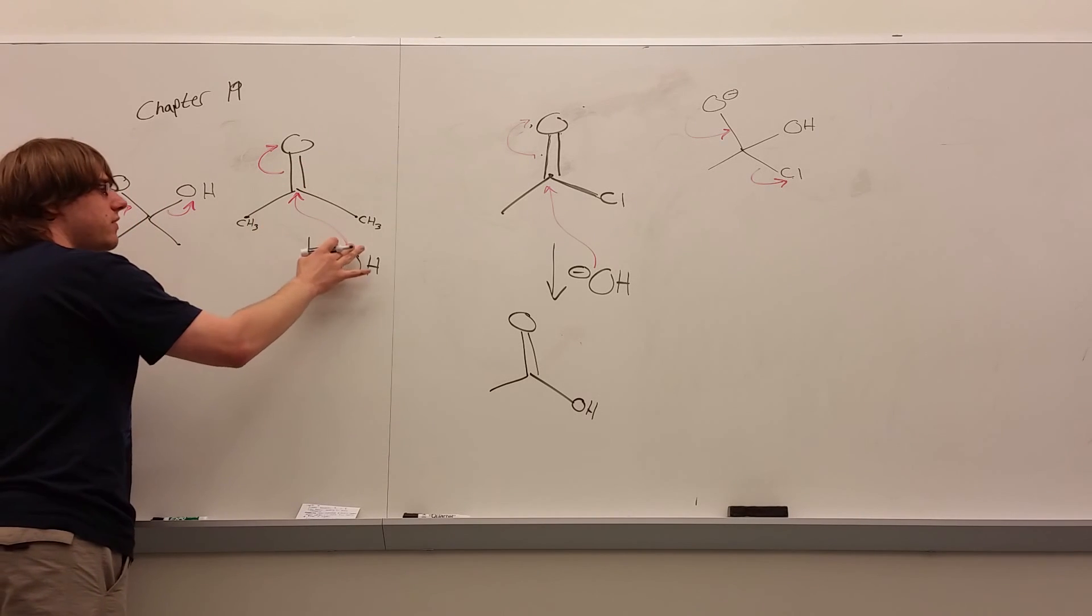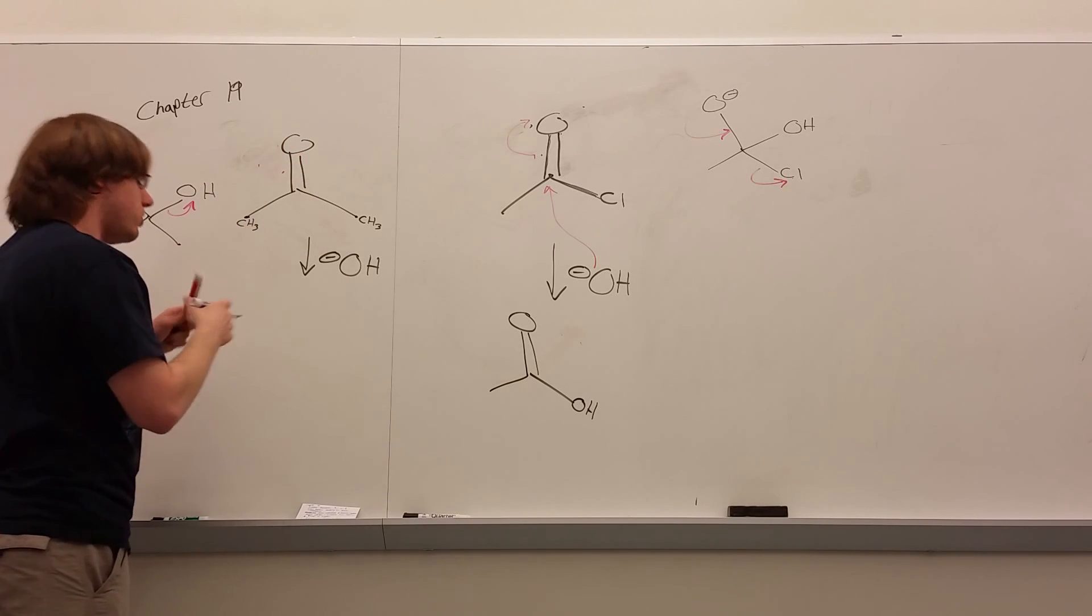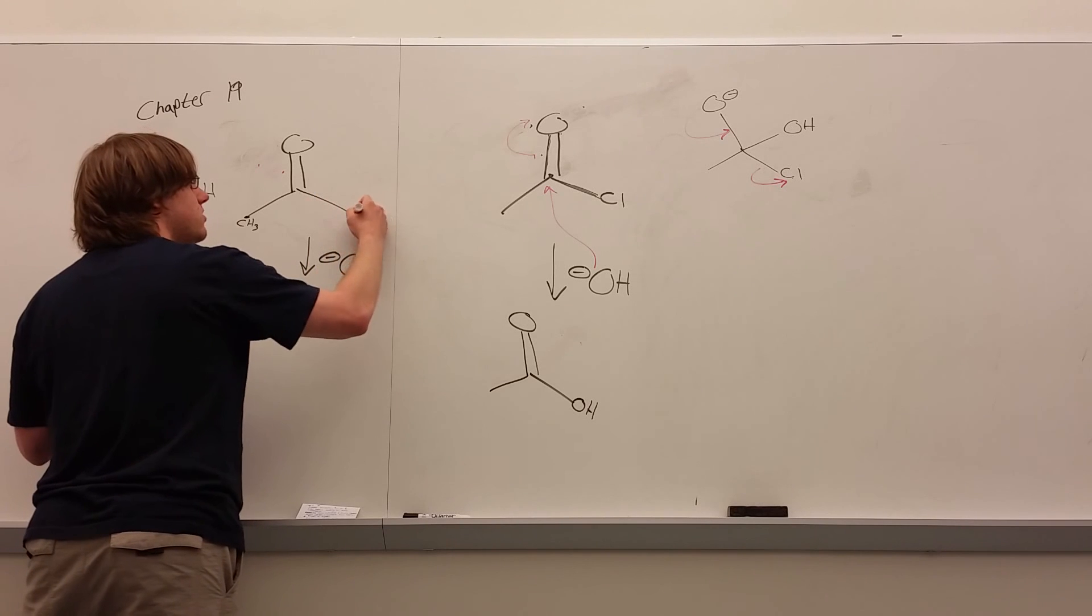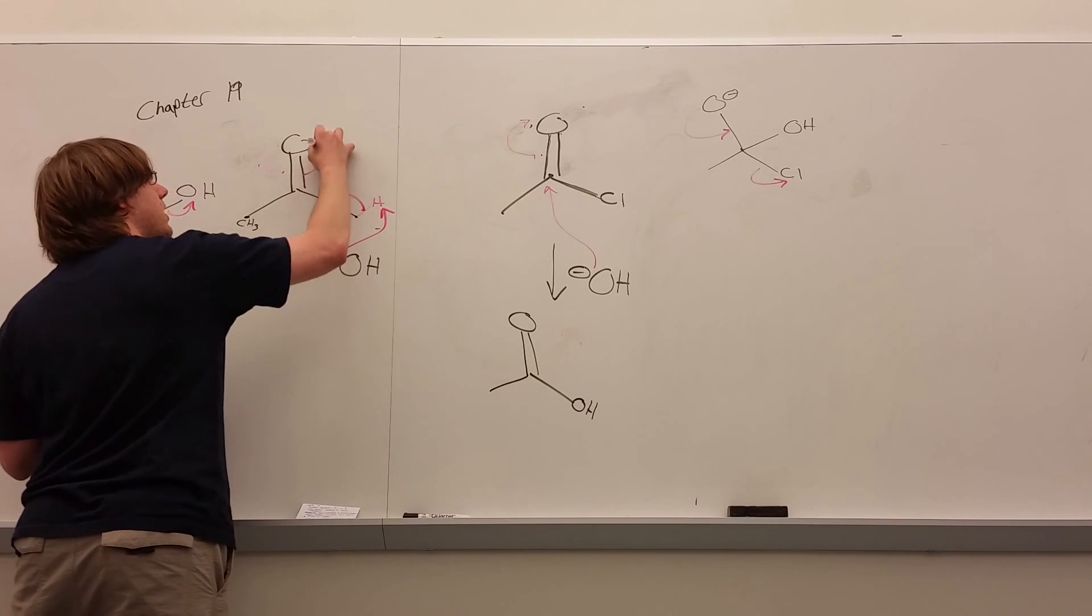Which means rather than this being the mechanism, even if it could happen, what really will end up happening in the end, the net result, is it's going to pull off one of these hydrogens. And so it'll go there, grab that H, and form the enolate like we've seen.